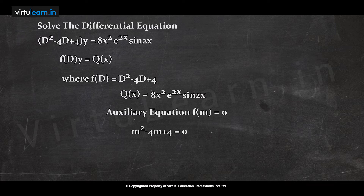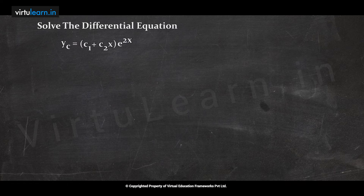The auxiliary equation is m² - 4m + 4 = 0. This factors as (m - 2)² = 0, giving equal roots m = 2, 2. According to the equal roots formula, the complementary function is yc = (c₁ + c₂x)e^(2x).